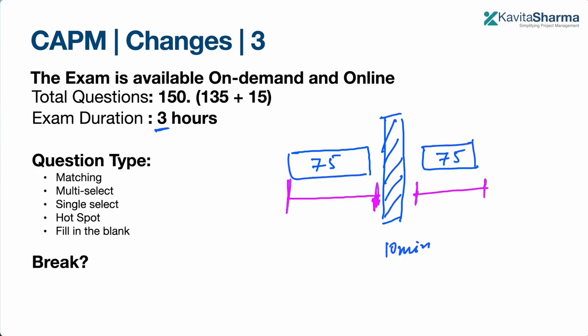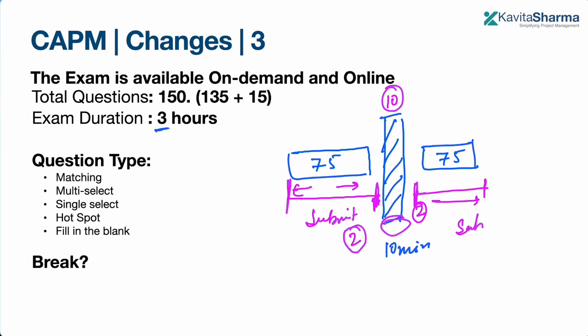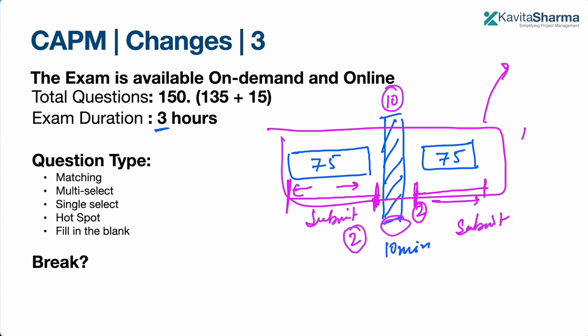You can navigate only within one section at a time. Once you click submit on Part A, you can take a break — whether at home or at a test center — for exactly 10 minutes, which does not count against your three hours. When you resume, the timer picks up from where it stopped. After completing Part B, clicking submit sends all questions to the server and you receive your results.